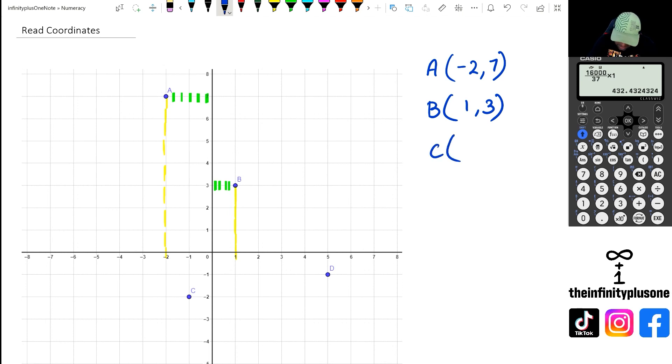Next we're going to look at point C. So with point C, we've got negative 1 along the x-axis, and as for the y-axis it is going to be at negative 2, so we're going to write this as negative 1, negative 2.